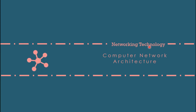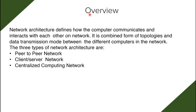Let's see some overview of computer network architecture. Network architecture defines how the computer communicates and interacts with each other on the network. It is a combined form of topologies and data transmission modes between the different computers in the network. There are basically three types of network architecture.